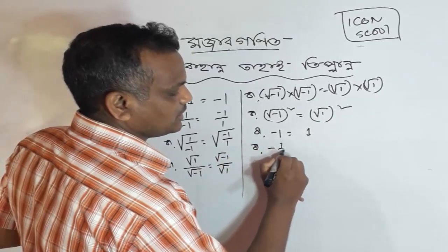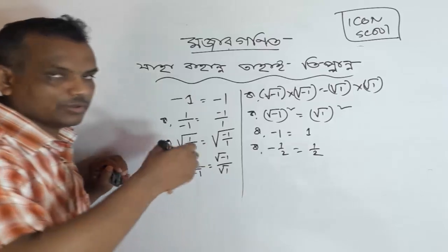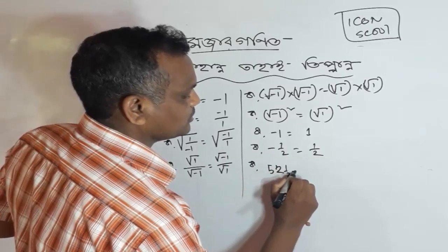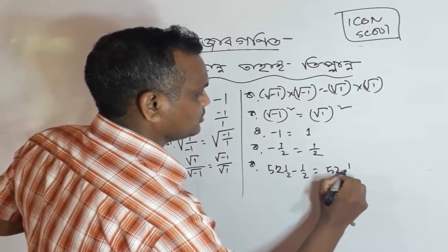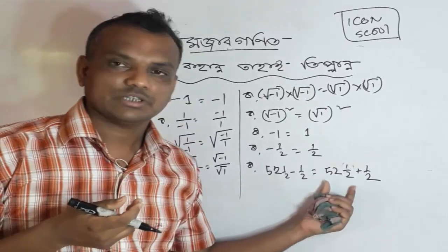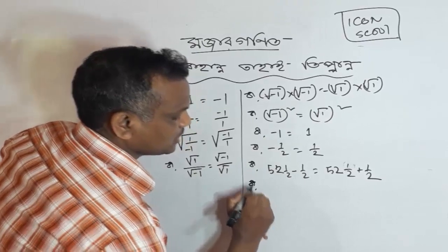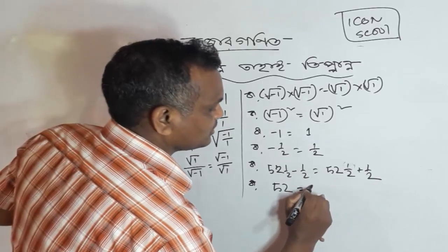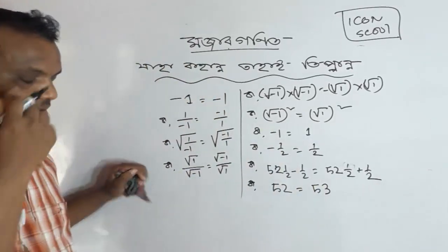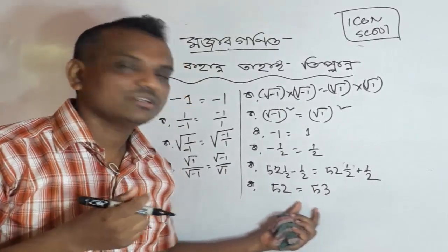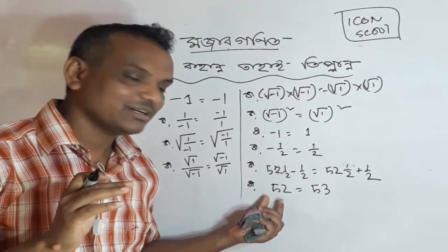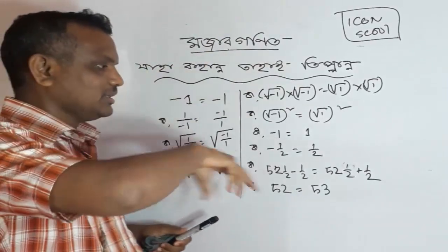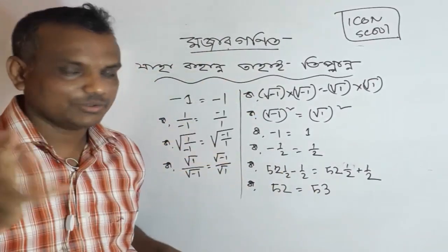This is the 2 of the body. Now we are going to use the 2 of the body. We are going to use the 2 of the body, and we will use the 2 of the body, which is the 2 of the body.